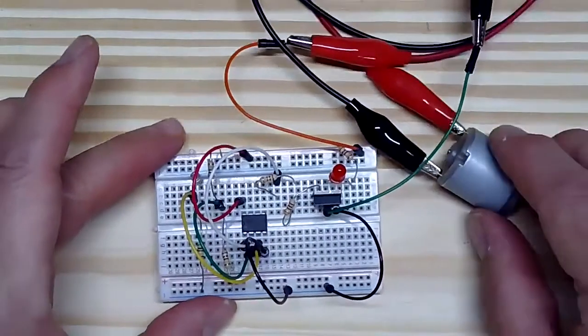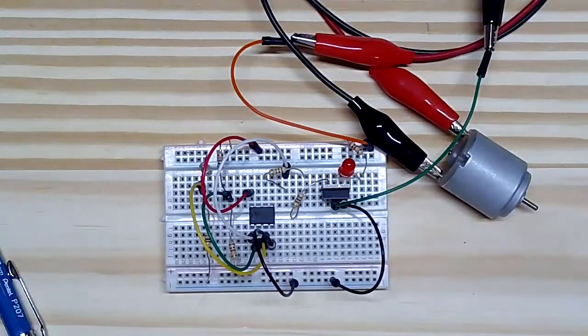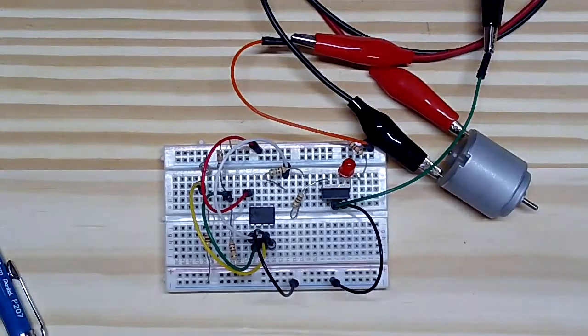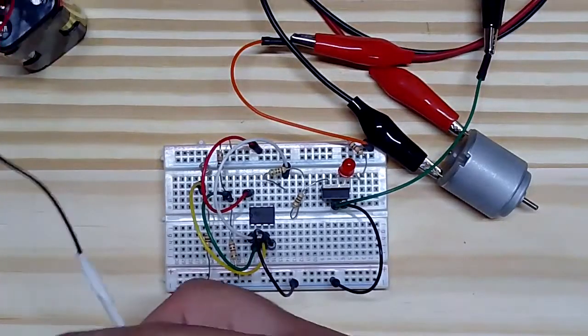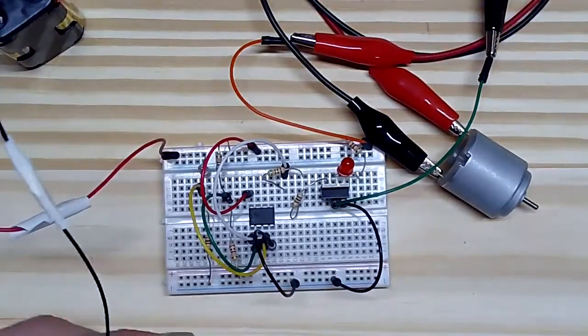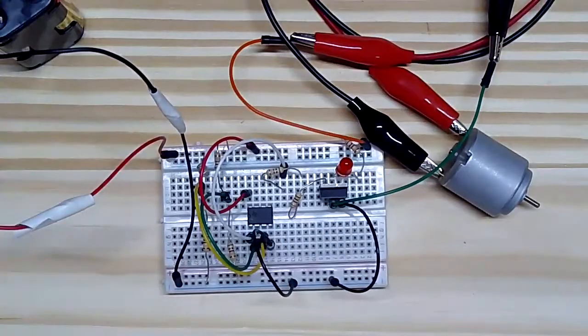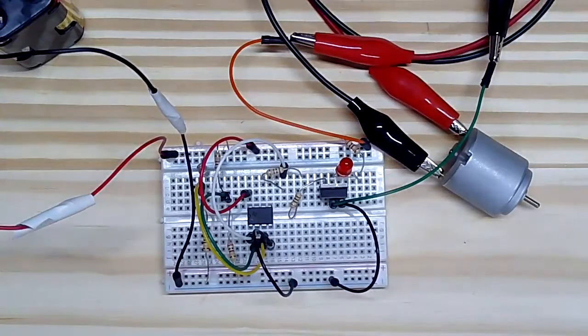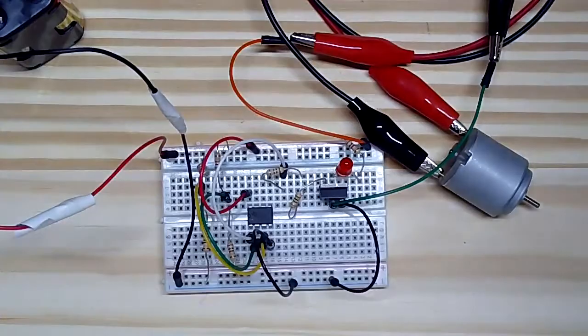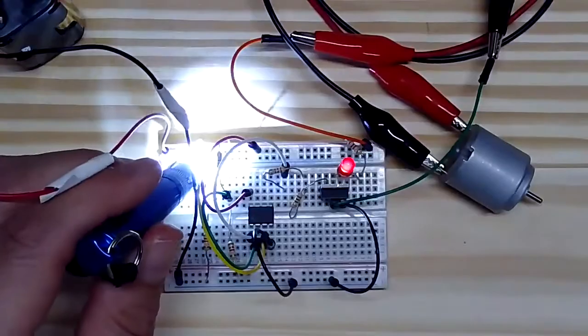Okay, so now if everything is hooked up correctly, when I bring the battery into the circuit, when I first hook it up, nothing should turn on because I just have ambient light shining on the CDS cell. But then when I shine bright light on the cell, I should cause the motor and the LED to turn on. And indeed.